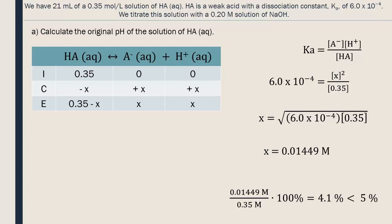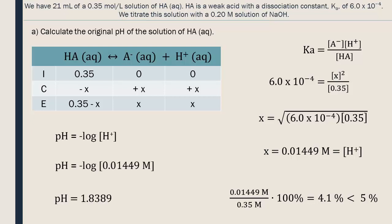Our approximation is correct, so the concentration of H plus ions is 0.01449 moles per liter. Now we need to find the pH. All the data in the question was given with two significant digits, so we round our answer to two significant digits. Note that for pH values and other logarithmic values, the digits before the decimal do not count as significant digits.